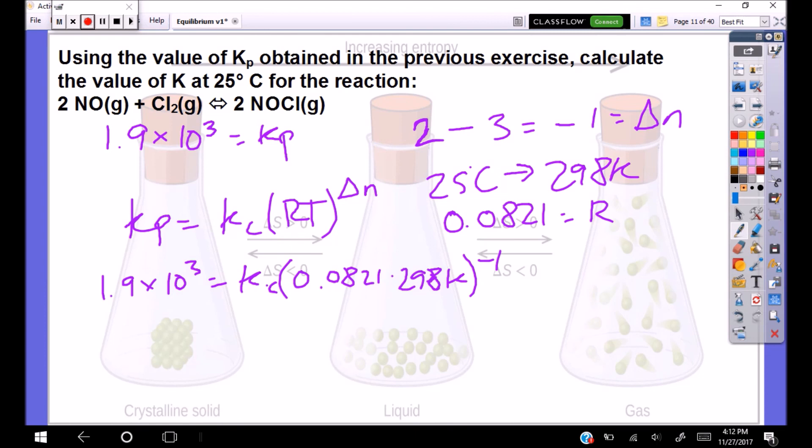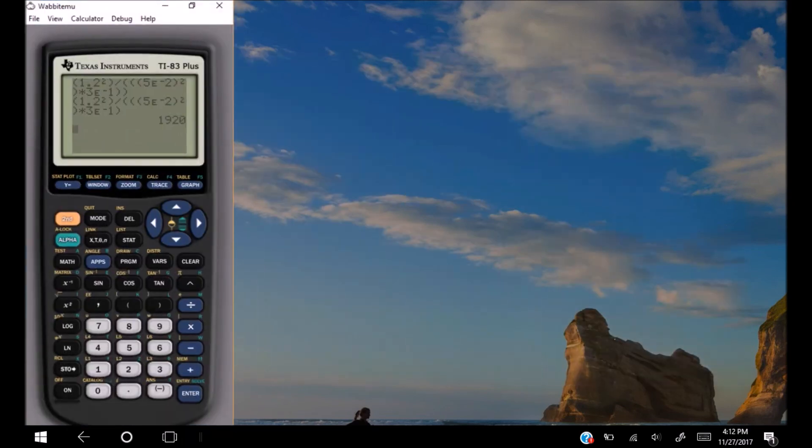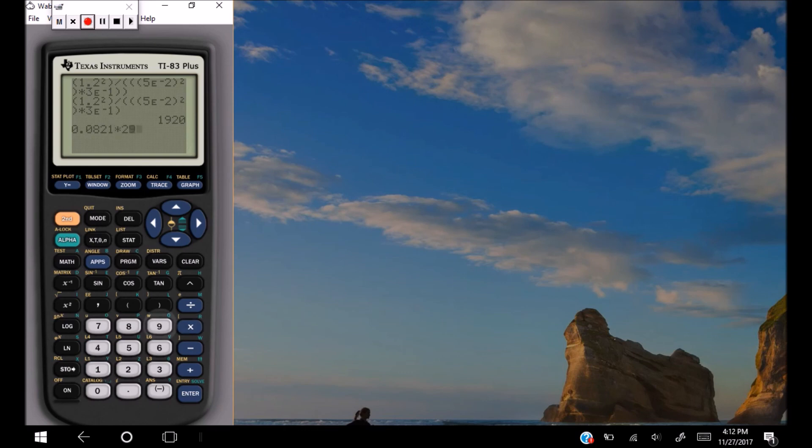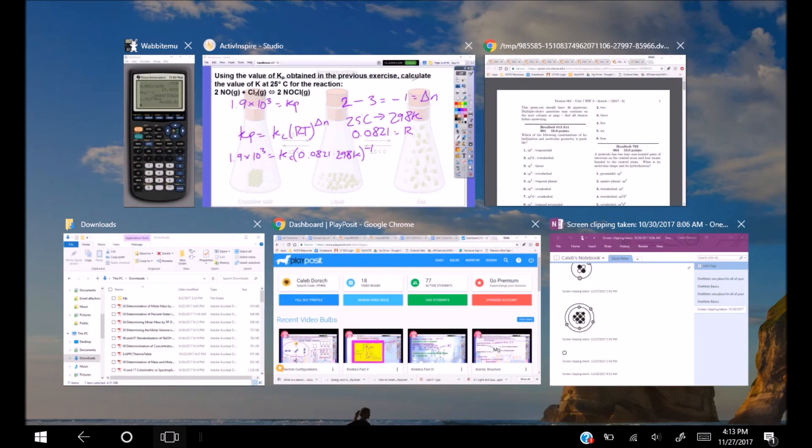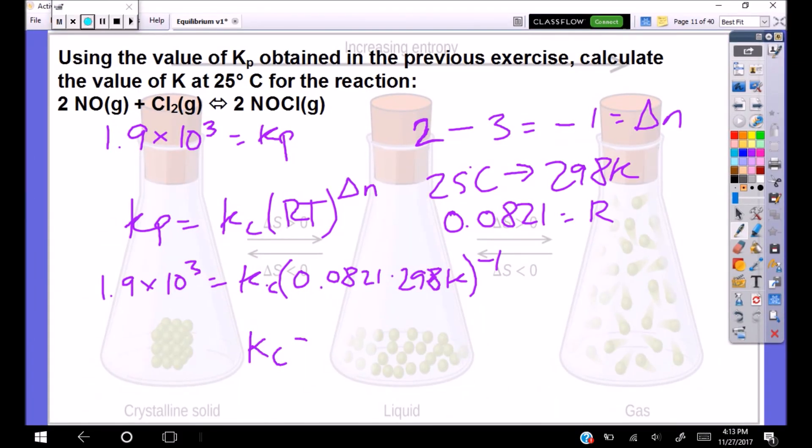So if I want to solve, I want to divide by 0.0821 times 298 to the negative first. So I'm going to do that in my calculator first. 0.0821 times 298. I'm going to raise that to the negative first power. And I'm going to do 1.9 E to the third divided by that. And I get 46,485. We're putting that in two sig figs. 4.6 times 10 to the fourth. Kc equals 4.6 times 10 to the fourth. Pretty easy.